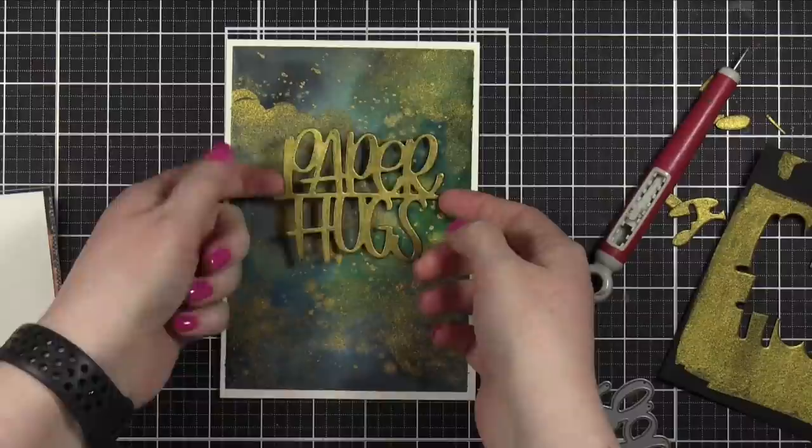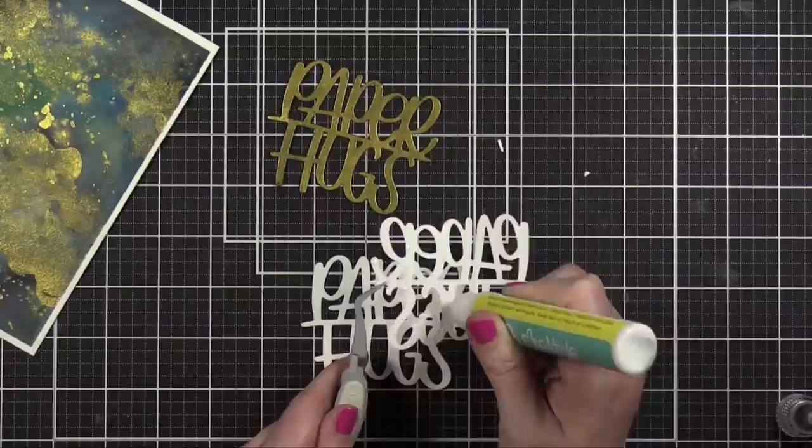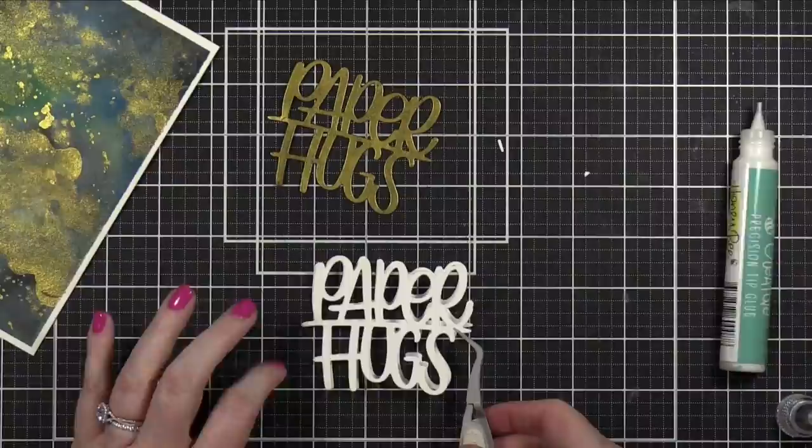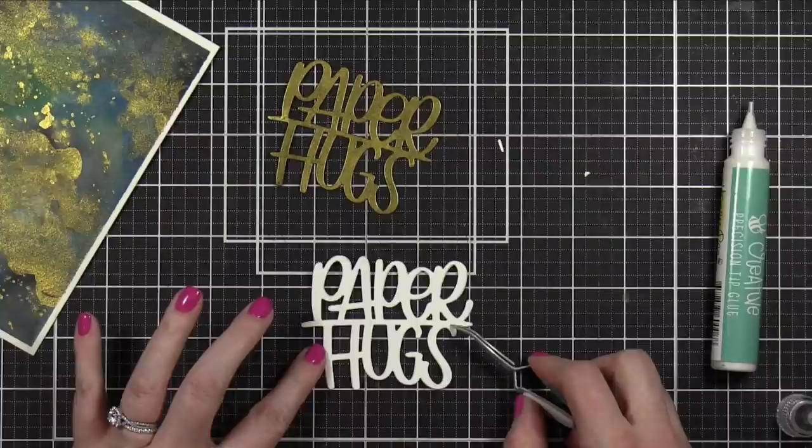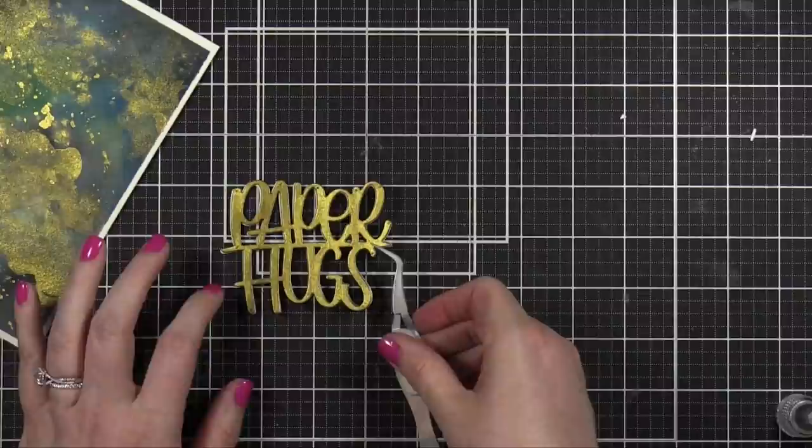And then I realized that I wanted it to stand up from the surface of my card more, so I die cut three additional pieces of that die from the Paper Hugs die. And I did three die cuts in white. I adhered those together, stacked them, and then I put the gold piece on top.